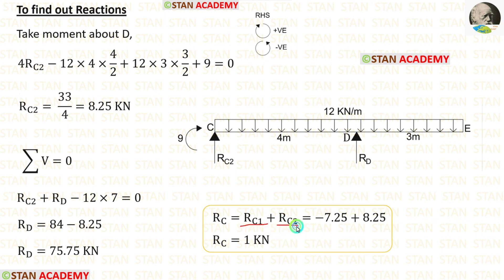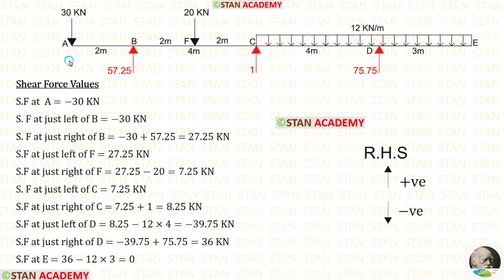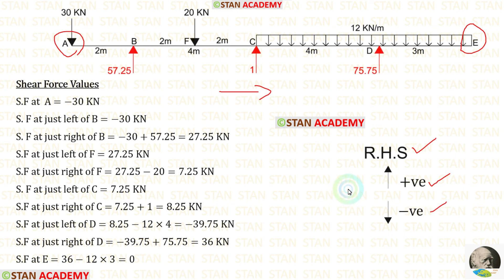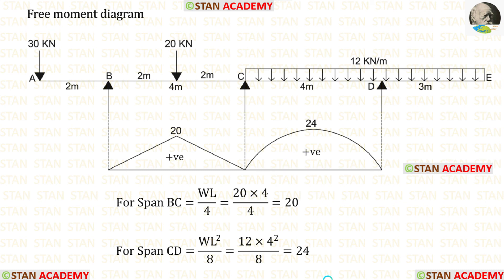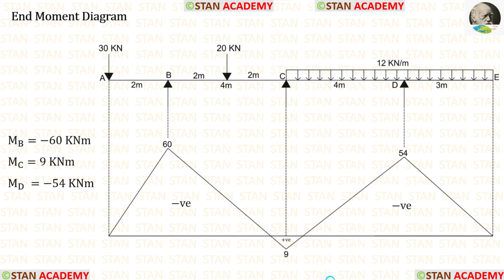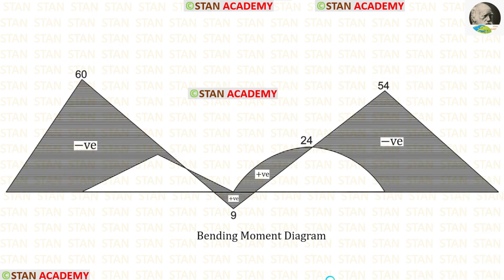Now let us add RC1 and RC2 to get the total RC. Then I will calculate the shear force values, starting from point A and moving towards point E — upwards is positive, downwards is negative. Using these values, we can make the shear force diagram. Next, let us make the free moment diagram, then the end moment diagram, and finally combine them to get the bending moment diagram. Now we are going to end this session. Thank you for watching this video.